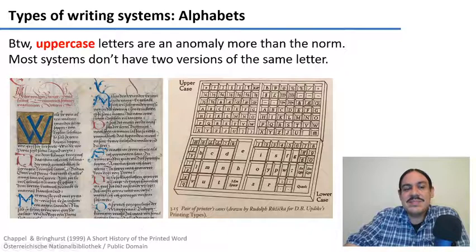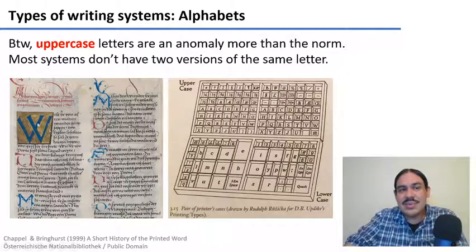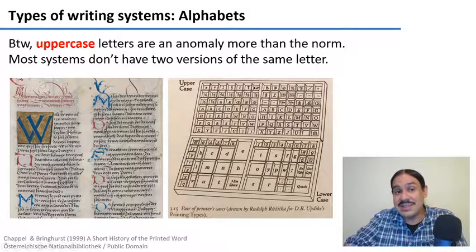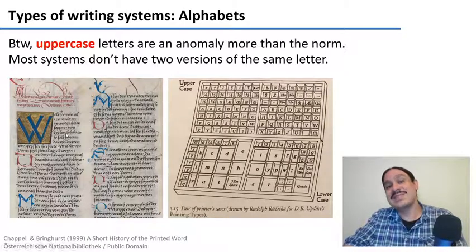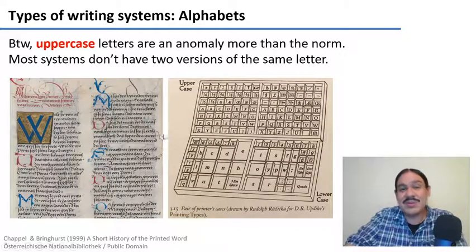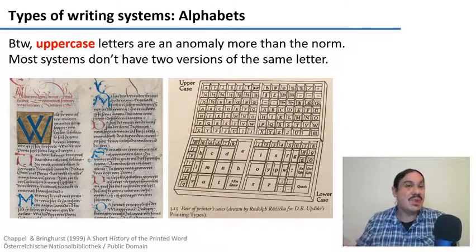This happened because medieval scribes liked to use fancy big letters at the beginning of their paragraphs. These decorative forms got mixed in with the regular letters, which were the lowercase. And so we now have a system with an alternation between the big ones and the small ones. They're called uppercase because they were kept in the literal uppercase of printer's boxes of printing blocks.